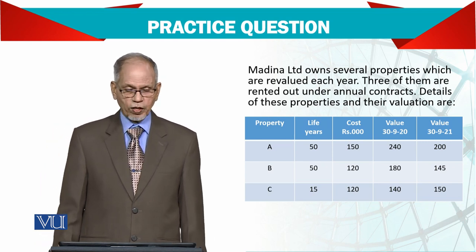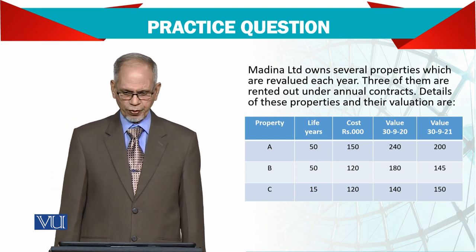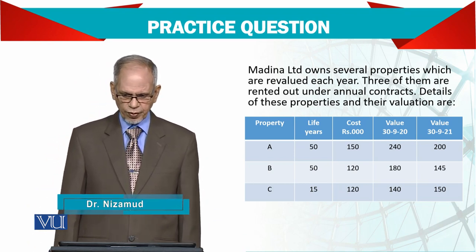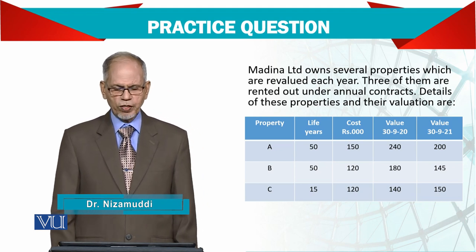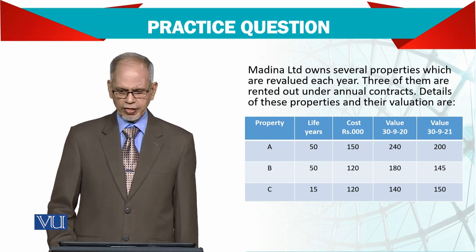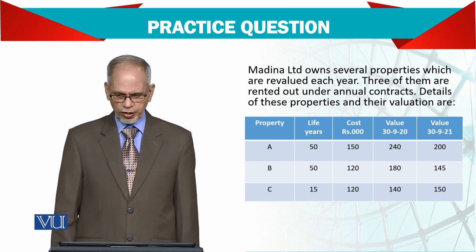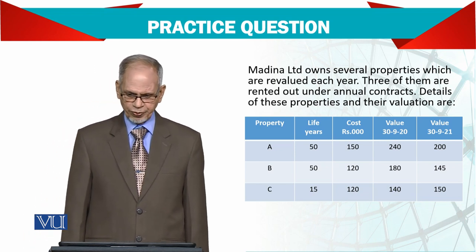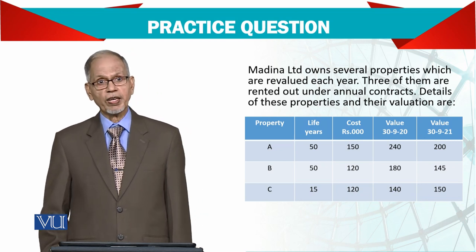Valuation on 30th September 2020, and again at the other year end, 2021. Property A: cost was 150 but the value on 30th September 2020 is 240, then it reduces in 2021. Property B: it was 120, goes to 180, then reduces to 145. Property C: 120 increases to 140, then again increases to 150.